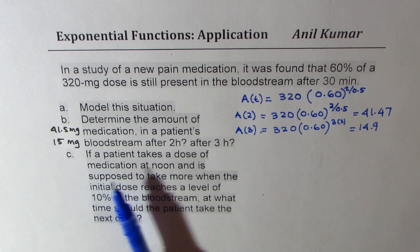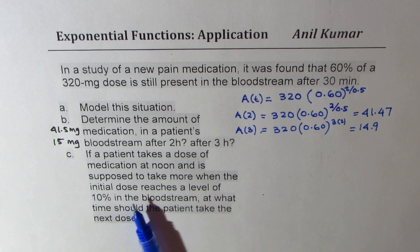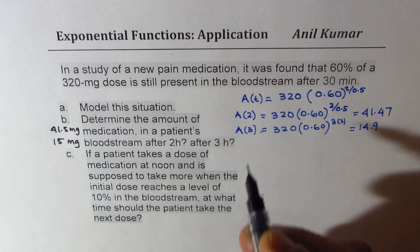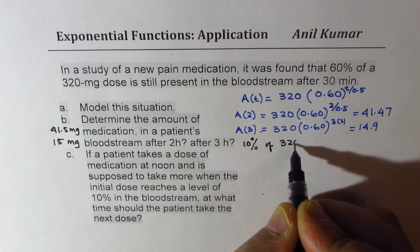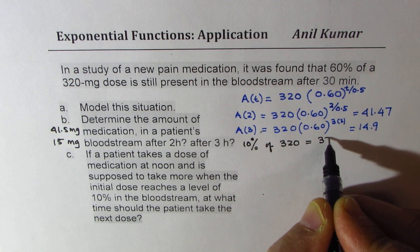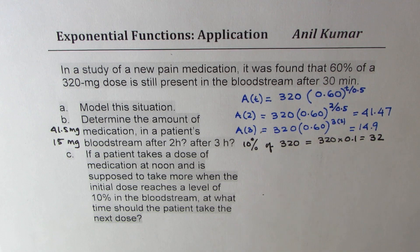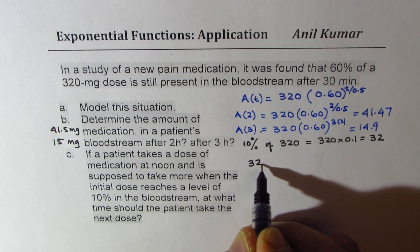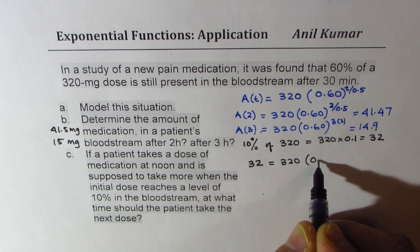If the patient takes a dose of medication at noon and is supposed to take more when the initial dose reaches a level of 10%, we need to find 10% of 320. So 10% of 320 is equal to 320 times 0.1, which is 32 milligrams. We know that the final amount is 32, so we write 32 for A — the amount left — starting with 320 milligrams times 0.60.